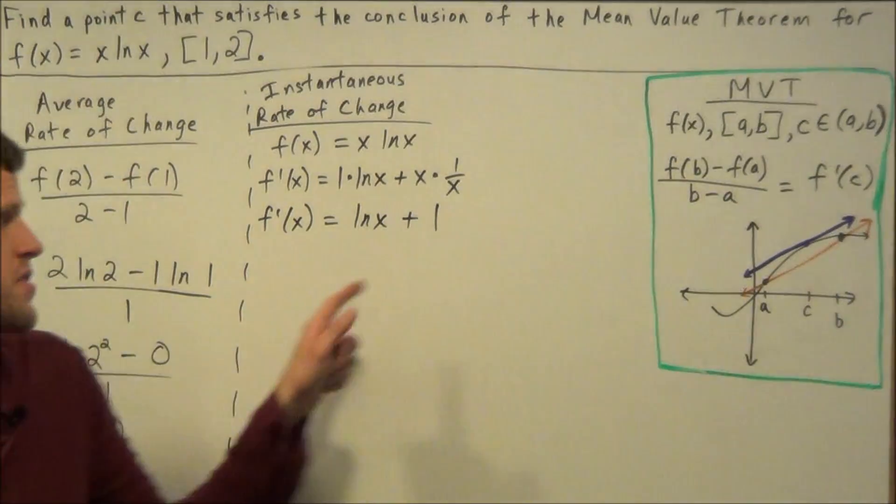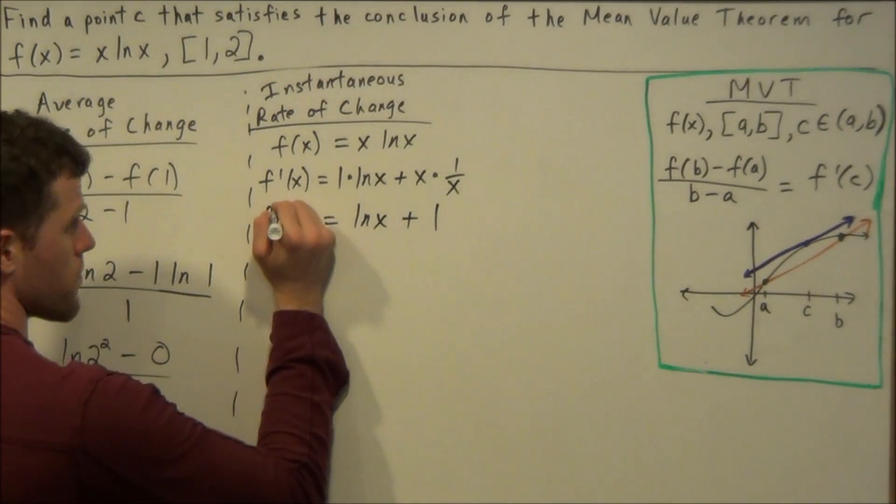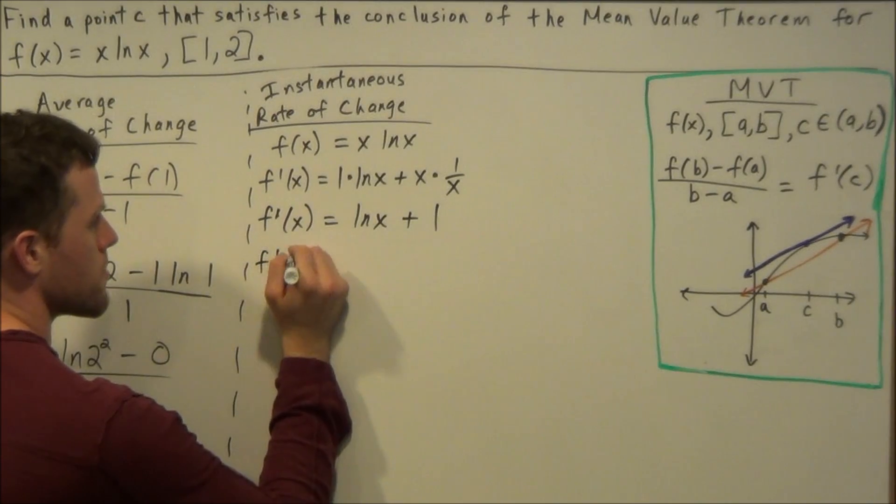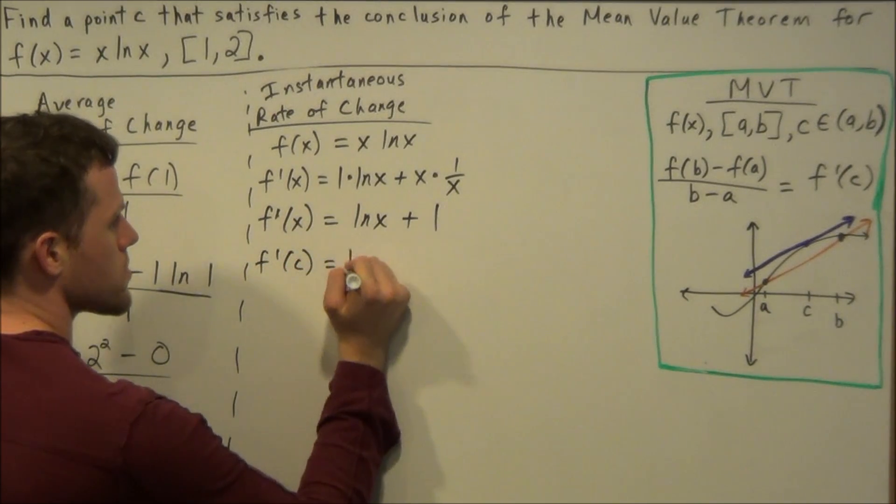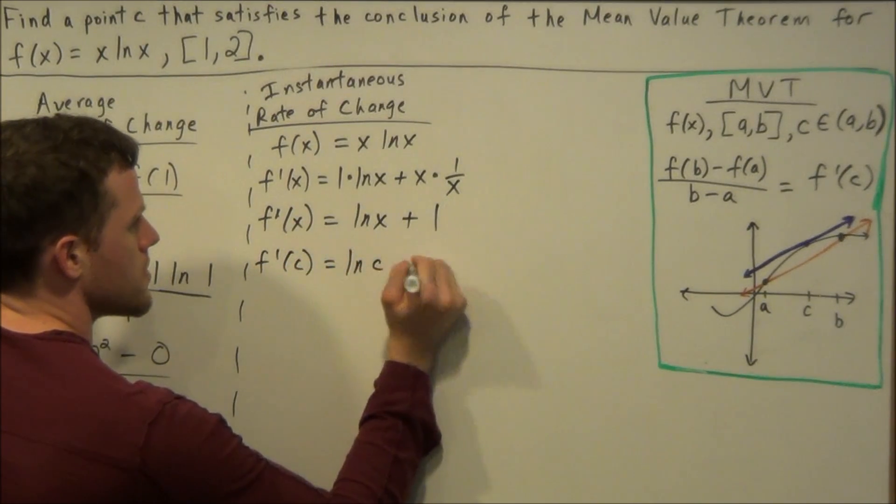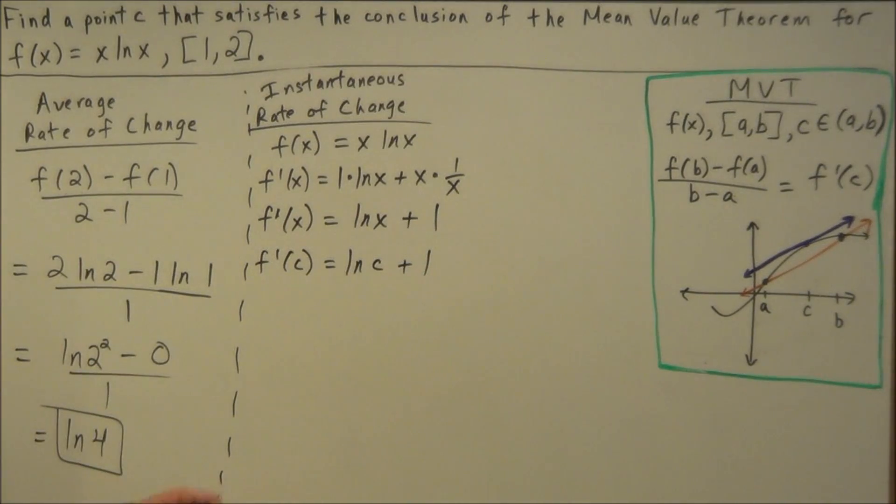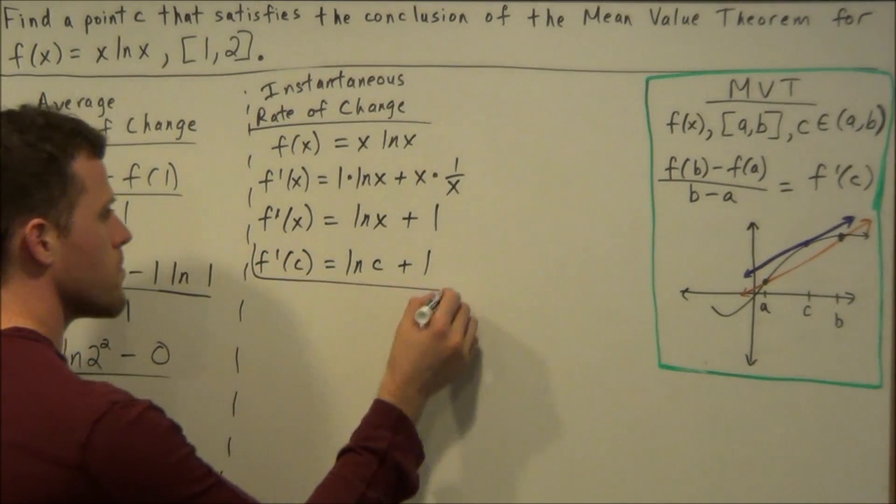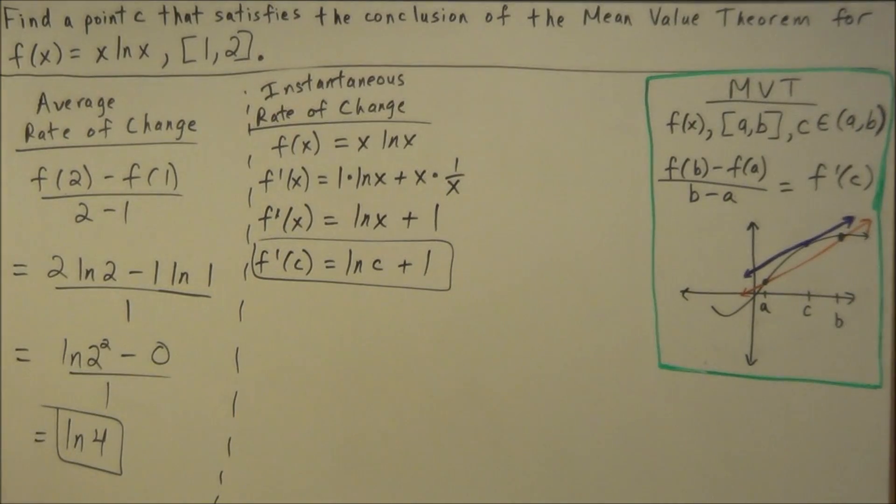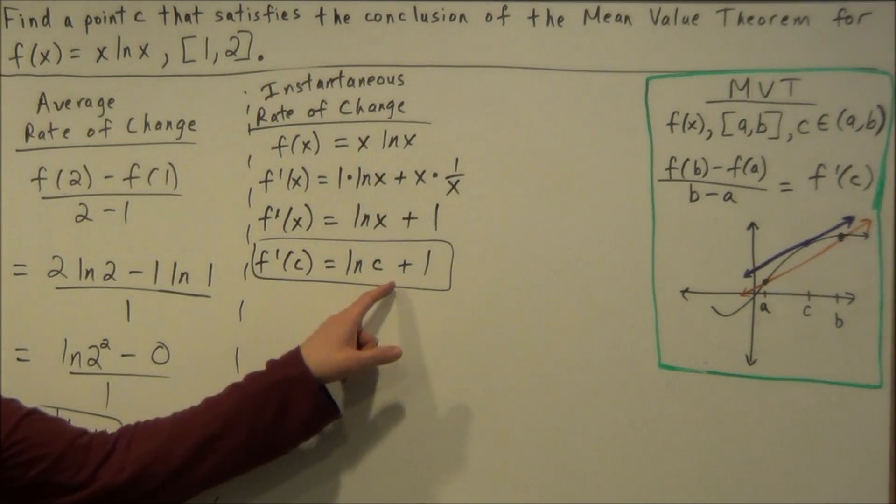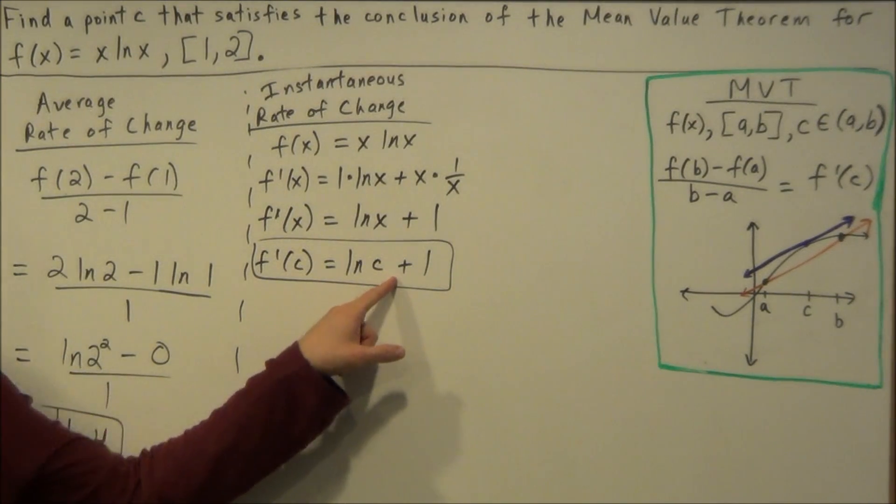This is f prime of x equals natural log x plus 1. So then to find f prime of c, we just plug in c into our first derivative, and we'll have f prime of c equals natural log of c plus 1. But at this stage of the problem, now we need to set the average rate of change equal to the instantaneous rate of change and solve for c.